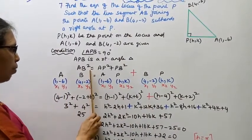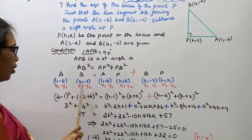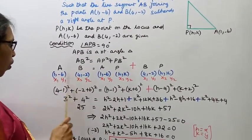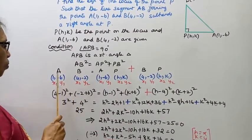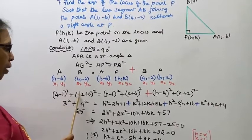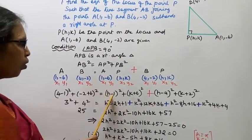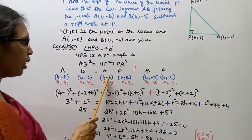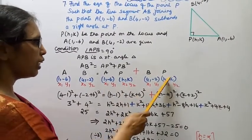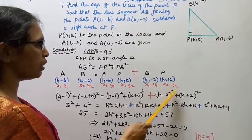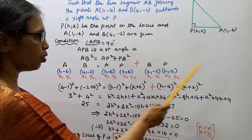AB² equals (x₂-x₁)² + (y₂-y₁)². So (4-1)² + (2-6)². AP² equals (h-1)² + (k-6)². BP² equals (h-4)² + (k-2)². Now AB² = AP² + BP².